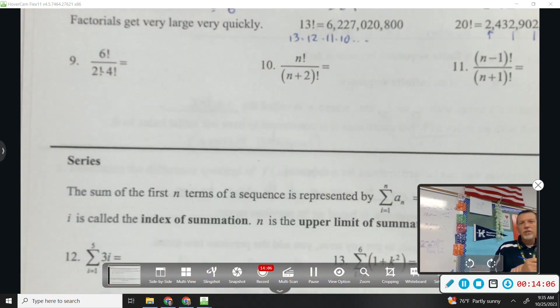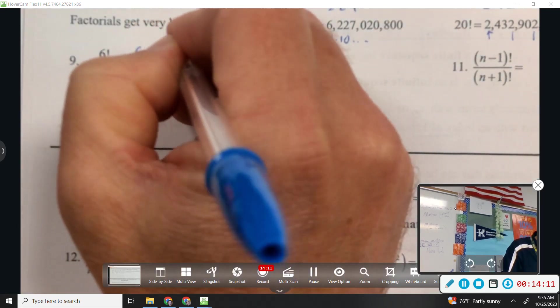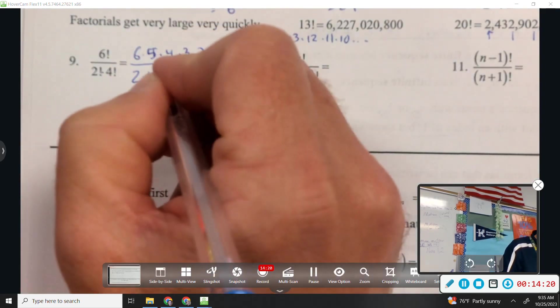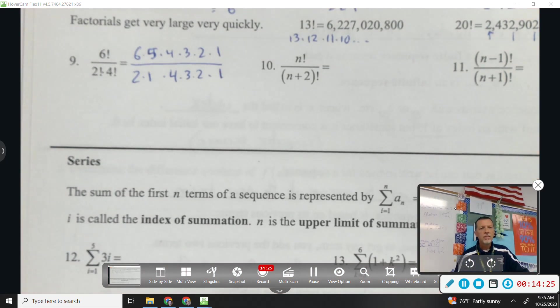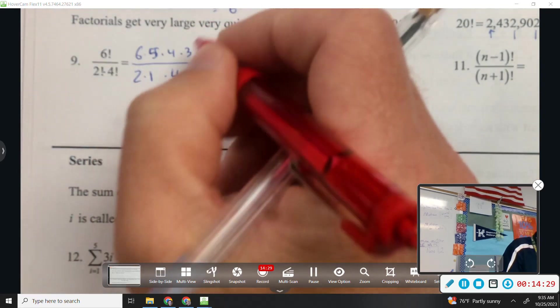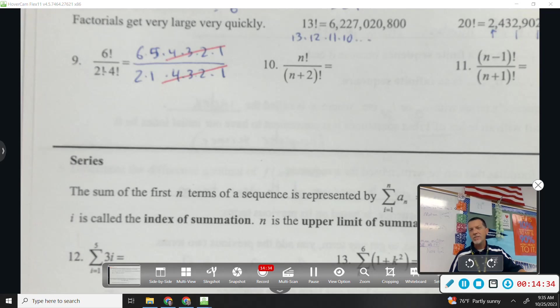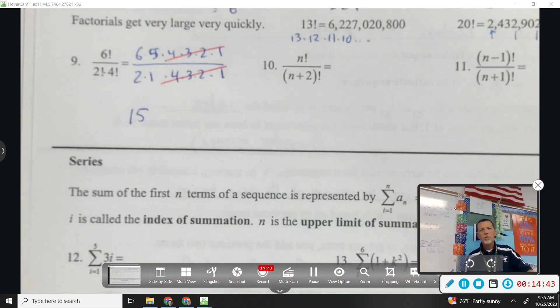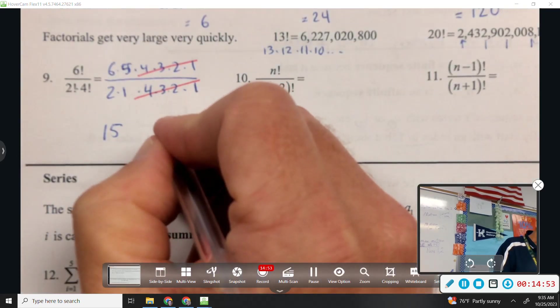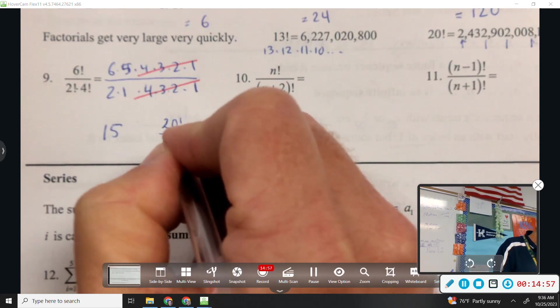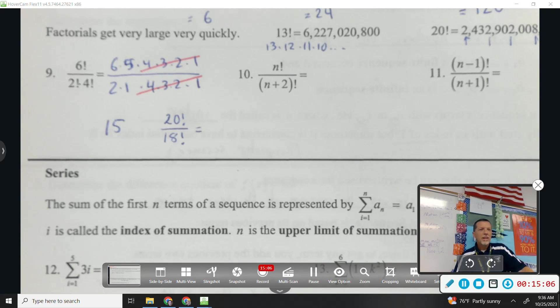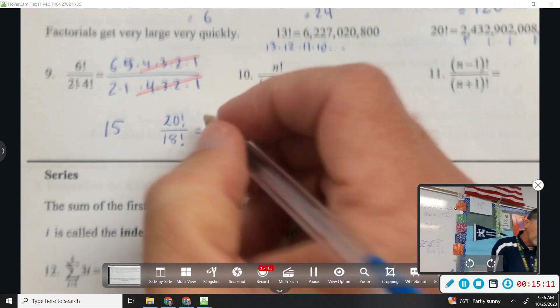6 factorial over 2 factorial 4 factorial. 6 times 5 times 4 times 3 times 2 times 1. It's more convenient to write them out because you can see what simplifies. 2 factorial and then 4 factorial. And then it's really convenient when they literally line up on top of each other. So 4 times 3 times 2 times 1, even if I don't know what it is, they cancel each other out. And 30 divided by 2 is 15. And so sometimes you can handle really large factorials as long as things will factor.